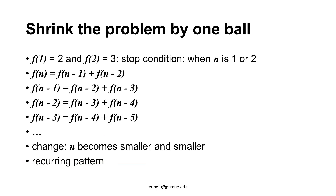To summarize: f(1) = 2 and f(2) = 3 are the stop conditions, which we know by counting. f(n) = f(n-1) + f(n-2) is the recurring pattern — and f(n-1) = f(n-2) + f(n-3) shows the same pattern repeating. The argument gets smaller and smaller — this is the change. As the argument becomes small enough, it eventually reaches the stop condition. We have now identified all three components of recursion.